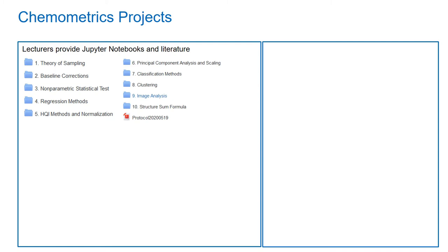The second part of our course are the chemometrics projects. Since students now know how to program, they can handle their own project. We give them the choice of ten different projects which are based on real research problems that we have encountered during our research at the Institute of Hydrochemistry. The projects range from theory of sampling to structure and formula puzzles, and what I'm going to show you today is the image analysis problem that our students solve.